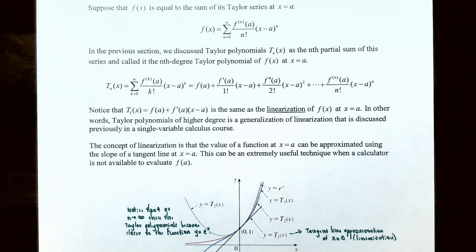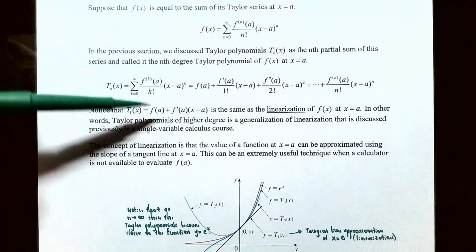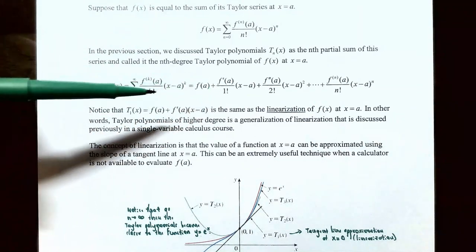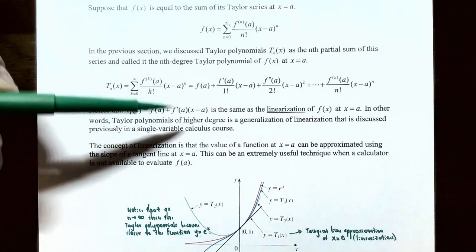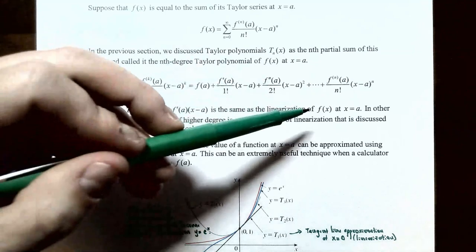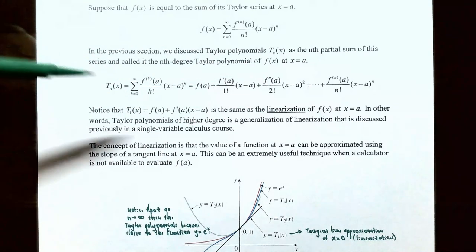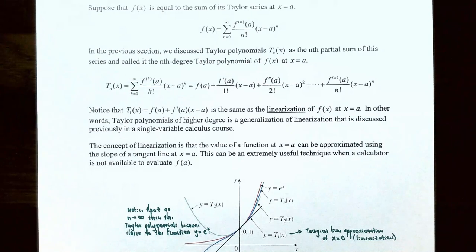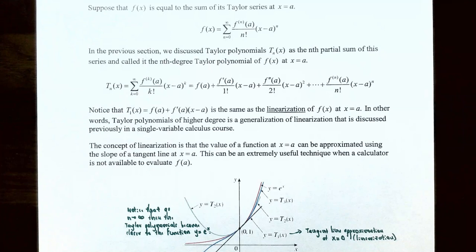One thing to notice is that the first degree Taylor polynomial is f(a) plus f′(a)/1! — which is just one — so it's f(a) plus f′(a) times (x − a). This was actually discussed in a first semester calculus course; it's called the linearization of f(x) at x equals a, where you approximate a function using a linear function. Taylor polynomials of higher degree are a generalization of linearization from single variable calculus.